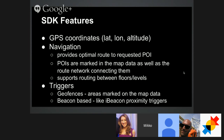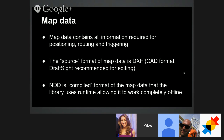Everything in our system is marked in the map from which we generate the map data, so that's not something you have to add yourself. You can also route between floors or levels. The third way to use the beacons is to use triggers — on some platforms called geofences — which are areas or zones where something happens. They can be either based on coordinates marked in the map data, or beacon-based, similar to how iBeacons work: basically, you're near a beacon and you get a trigger. The map data, the NDD file, contains all information required for positioning in GPS coordinates, routing, and triggering.